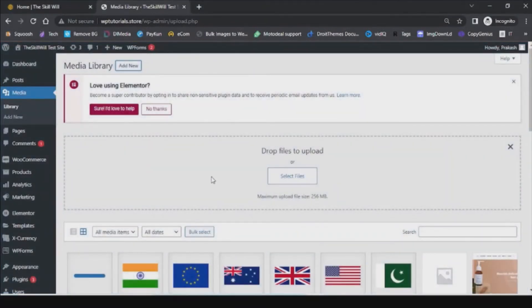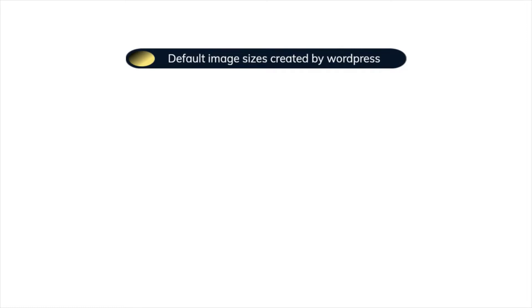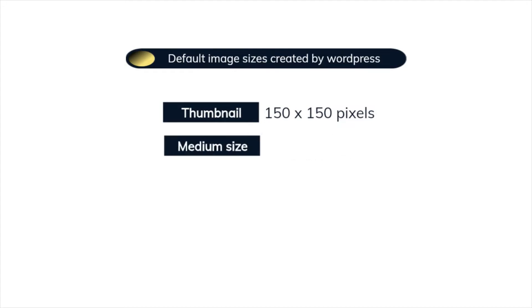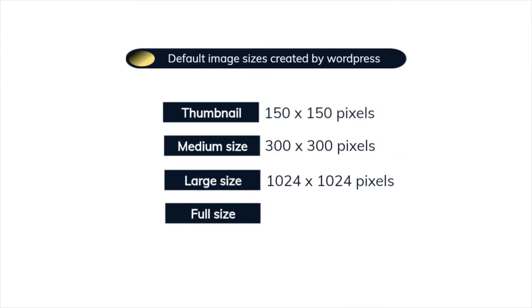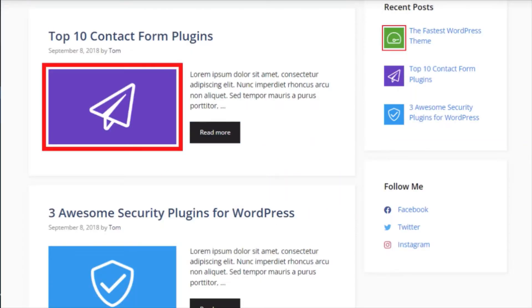Whenever we upload an image, WordPress automatically creates four different image sizes: the thumbnail size at 150 by 150 pixels, the medium size at a maximum of 300 by 300 pixels, the large size at 1024 by 1024 pixels, and the full size of the original uploaded image. WordPress does this so you don't have to resize images manually and to ensure the best image size is selected for different locations — for example, a blog post header versus a thumbnail.